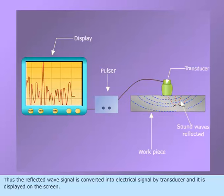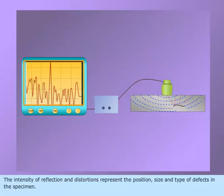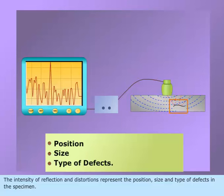The reflected wave signal is converted into an electrical signal by the transducer and is displayed on the screen. The intensity of reflection and distortions represent the position, size, and type of defects in the specimen.